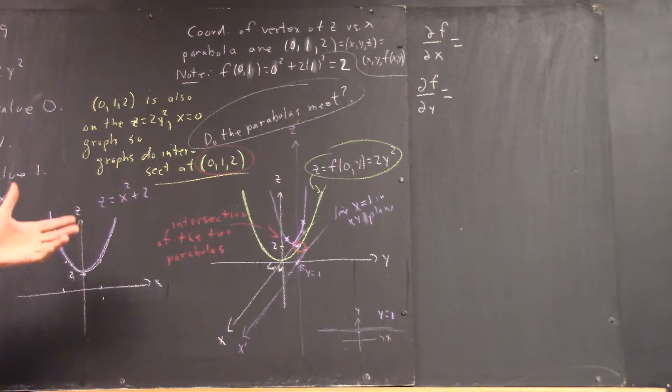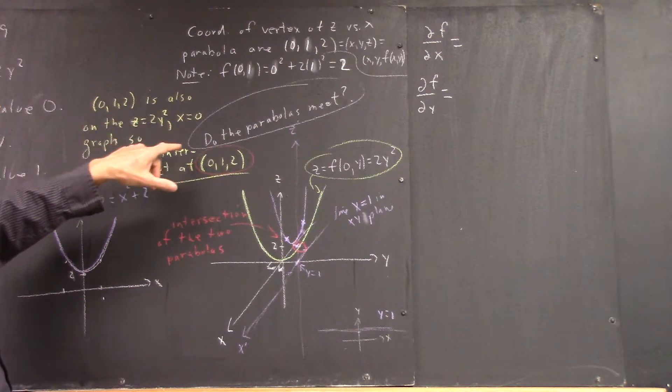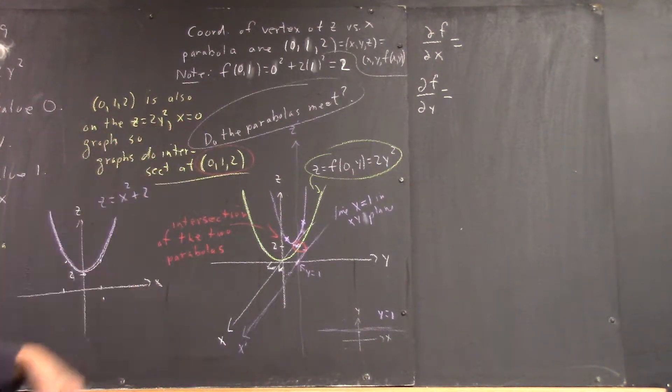Now, we note that this point is also on the Z = 2Y², X = 0 graph.